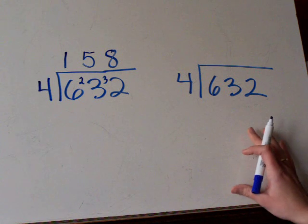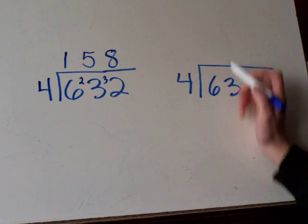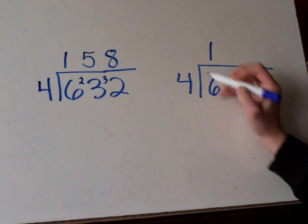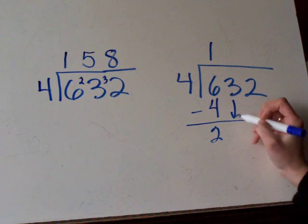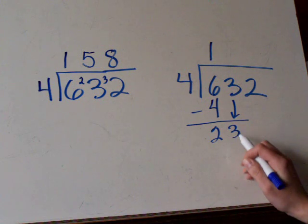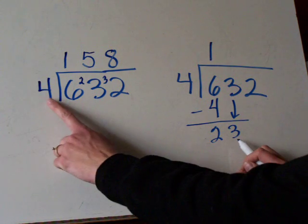Now had we done this long division, it would have gone like this. 4 goes into 6 once. Then you do 1 times 4. You write it down here. You subtract. You bring the 3 down. And now you have 4 goes into 23, which is what we had over here.